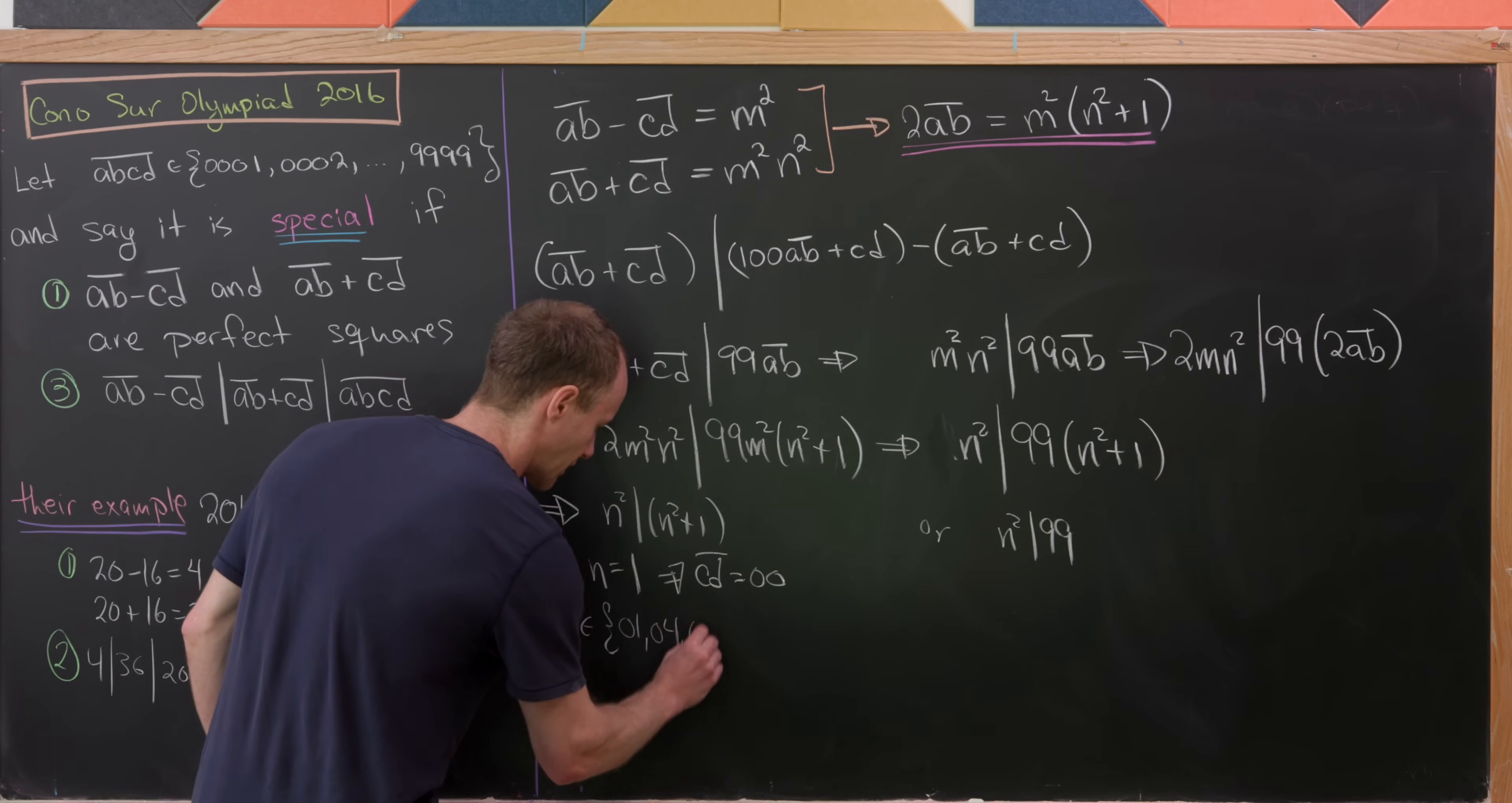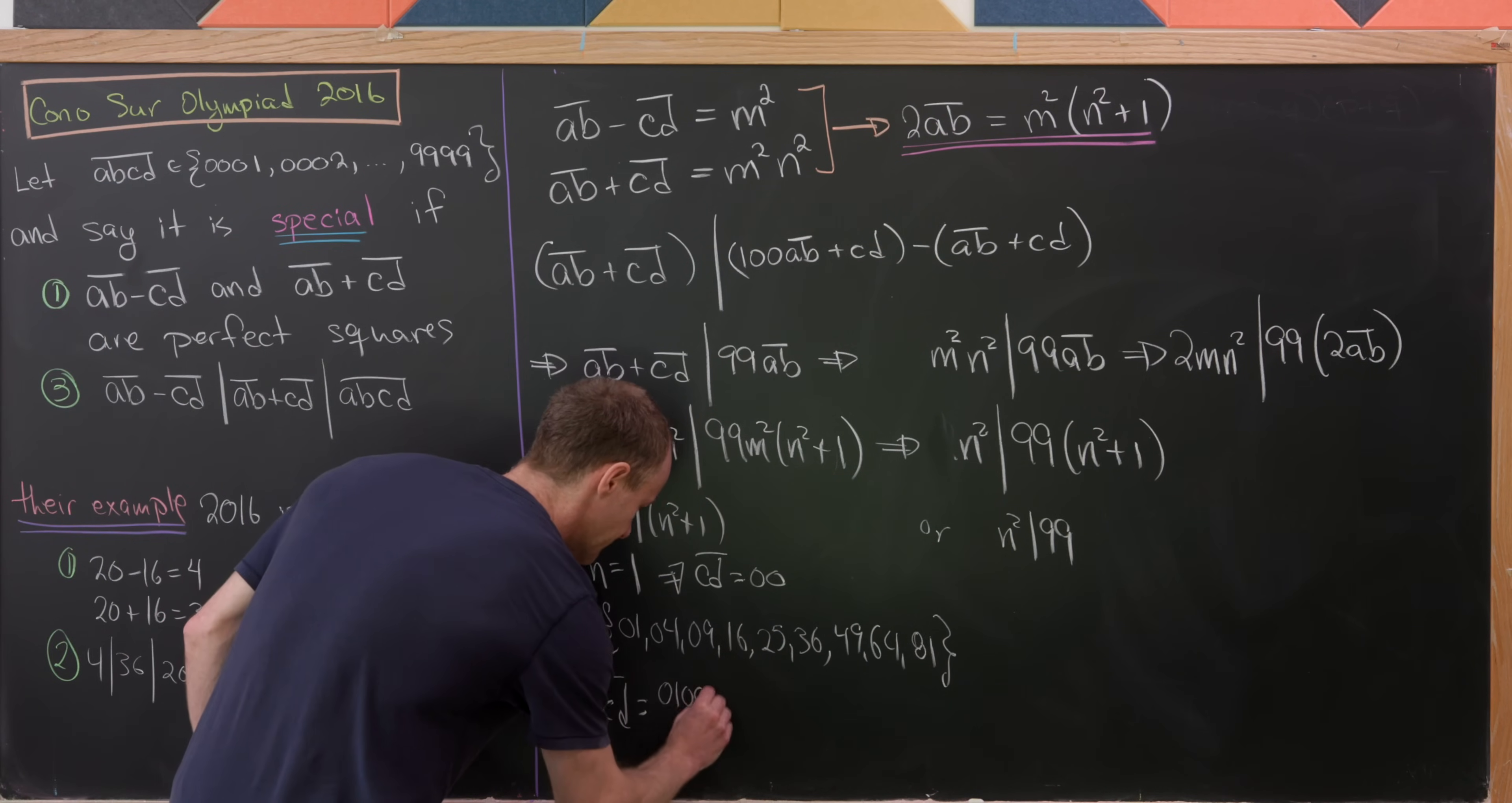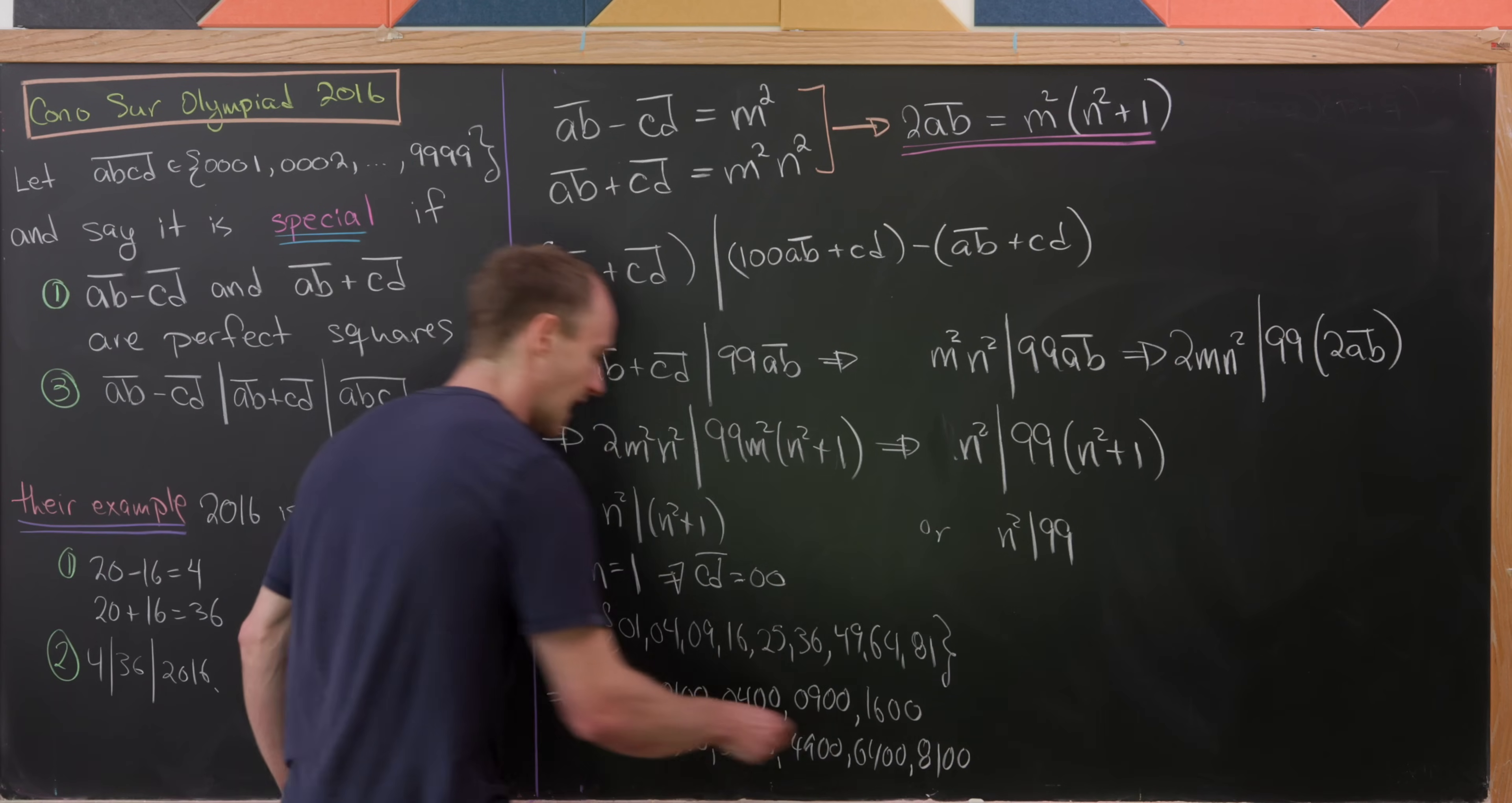AB comes from the set of all two-digit perfect squares: 01, 04, 09, 16, 25, 36, 49, 64, and 81. To build our number ABCD, we just glue 00 on the end of each: 0100, 0400, 0900, 1600, 2500, 3600, 4900, 6400, and 8100. So we've got our first list of nine special numbers from this first case.